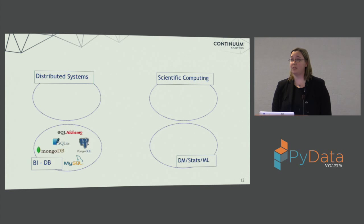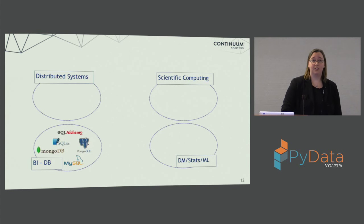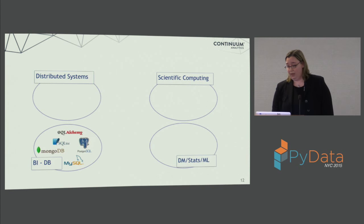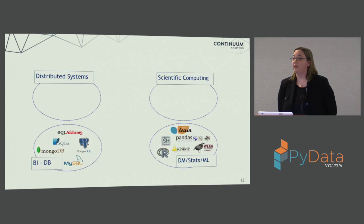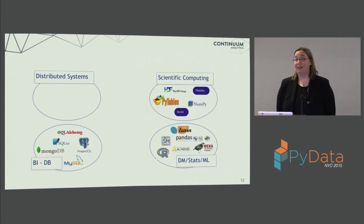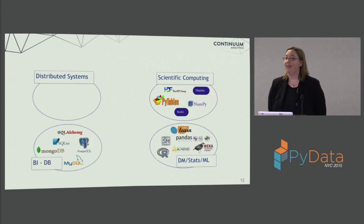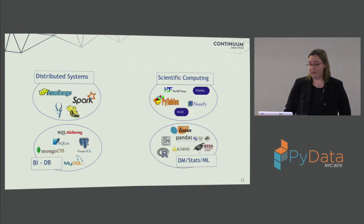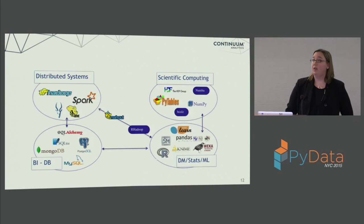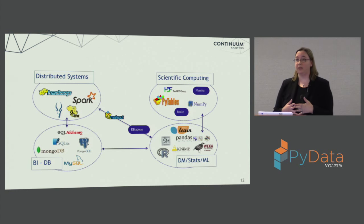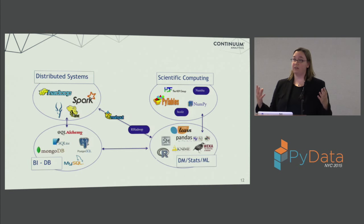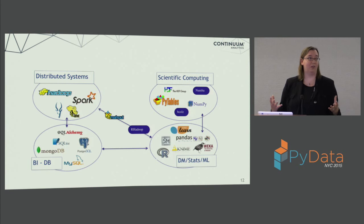We're looking at basic business intelligence database technologies — MongoDB, MySQL, all these different backends for storing data. In data mining and machine learning, we have KNIME, R, Scikit-learn, WEKA, Pandas. Scientific computing: SciPy, NumPy, Numba, PyTables. Distributed systems: Hadoop, Impala, Hive, Spark. And things that cross over between areas — Mahout, R with Hadoop, and Spark ML also available. We have this huge landscape of tools we want to put together into a system and make it function in an easy way.